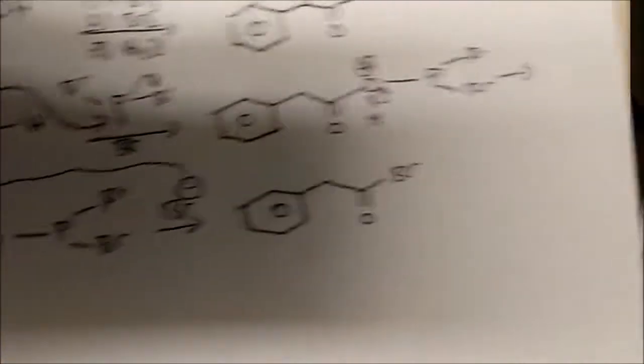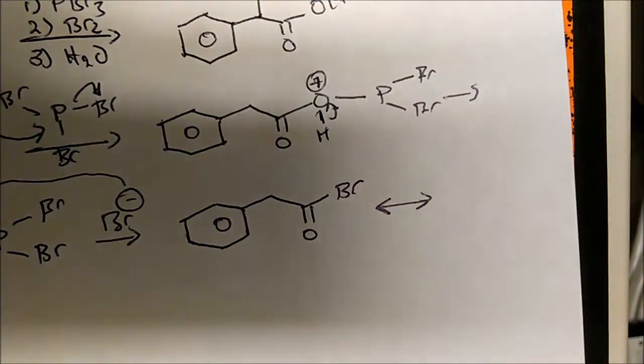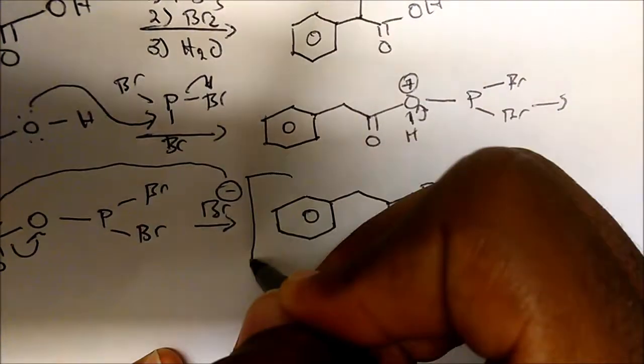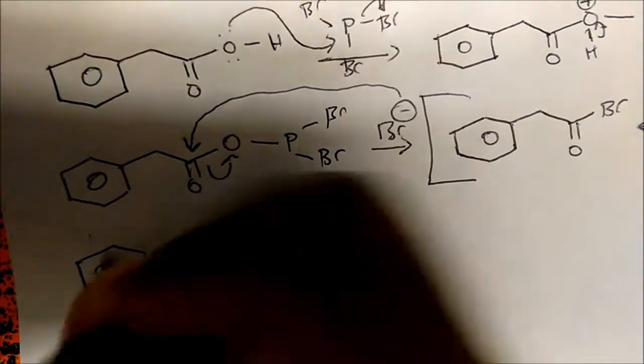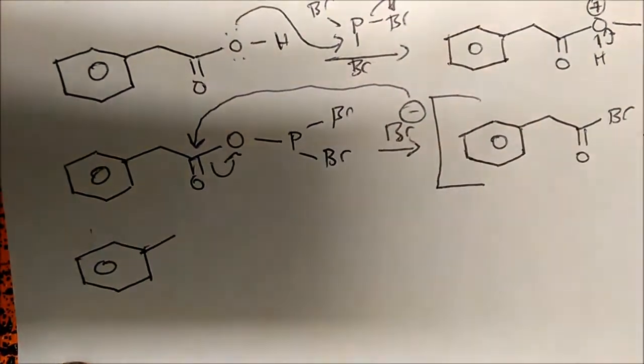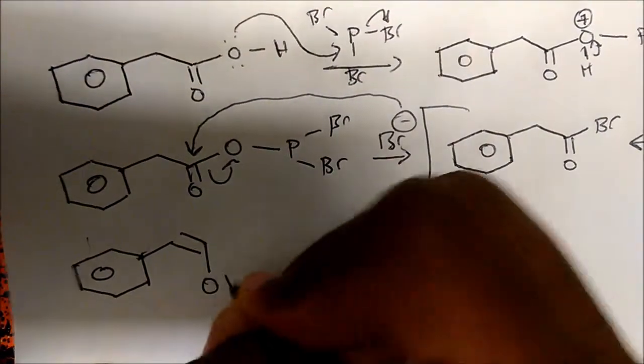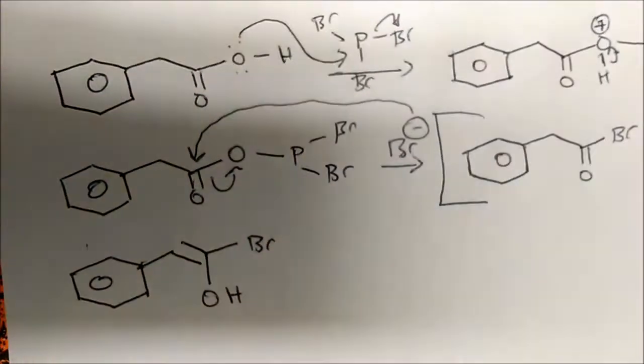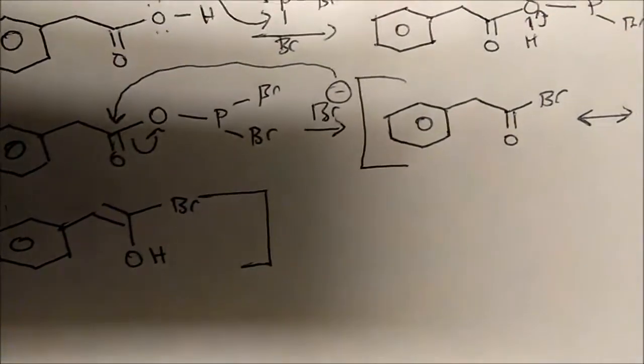Now let's draw the resonance form of this structure. And I'm gonna put this in brackets. Let's draw the resonance structure. So the other one looks similar to this. There's my benzene ring. There's my group. I'm gonna have an alkene. I'm gonna have an alcohol and I still have my bromine here. So these structures are equivalent.